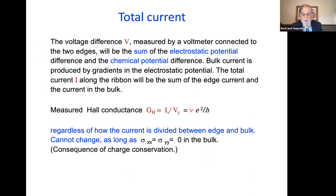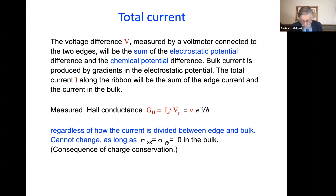The total current will be the sum of the edge current and the bulk current, and the voltage difference measured by a voltmeter connected to the two edges would be the sum of the electrostatic potential difference and the chemical potential difference. Basically because of current conservation, the measured Hall conductance — the ratio of total current flowing in the x-direction to the voltage drop in the y-direction — is independent of any details of how the current is divided between the bulk and the edge, and it's just equal to nu times e² over h. Furthermore, because of conservation of current, it cannot change as long as the longitudinal conductivity remains constant in the bulk. That's sort of why it's quantized.